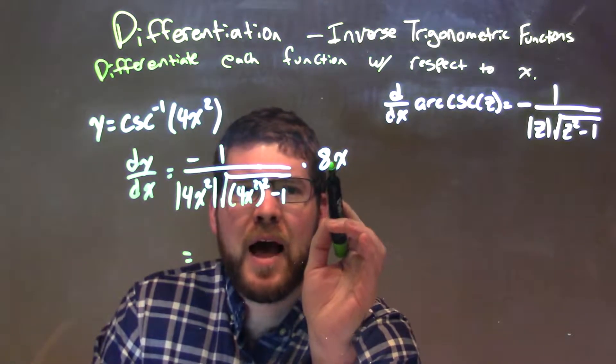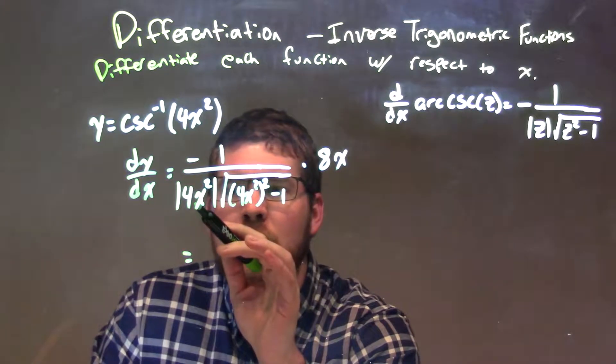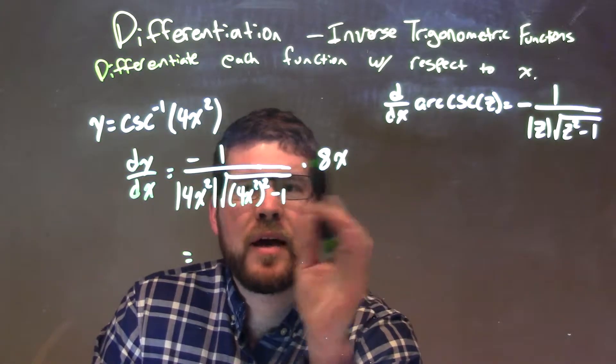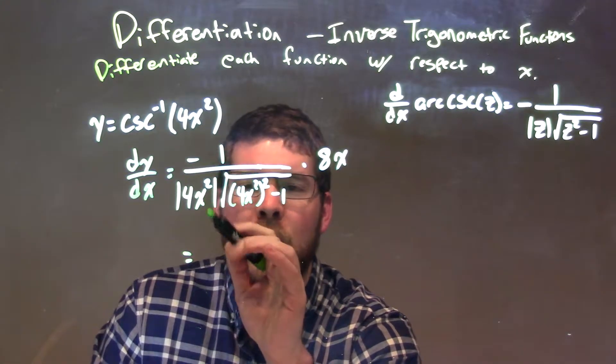And then we can cancel that out with the 8x. 8 and 4, giving me the 2 up top, and the x cancels down to 1x here, meaning 1x in the denominator, so I have a negative 2 up top over just 1x in the denominator.